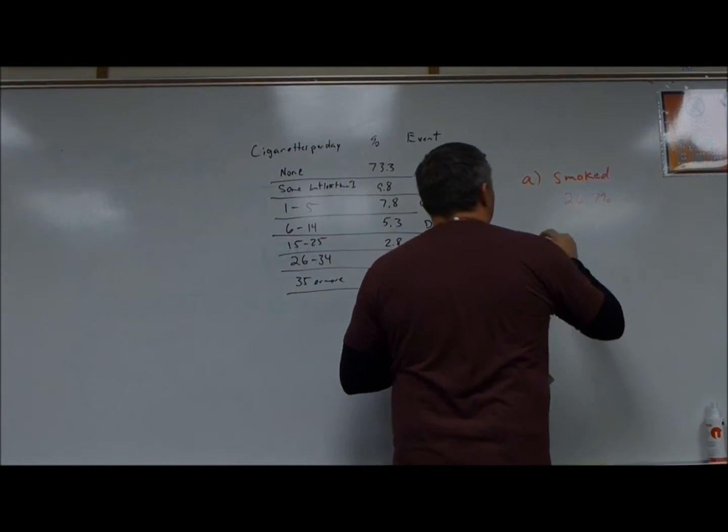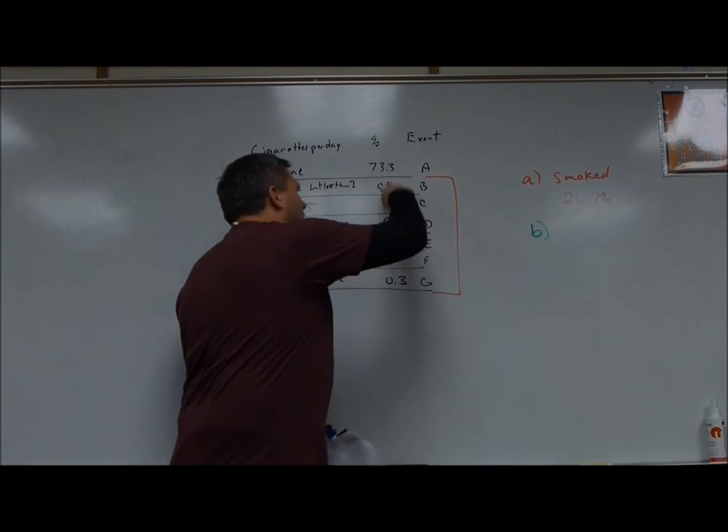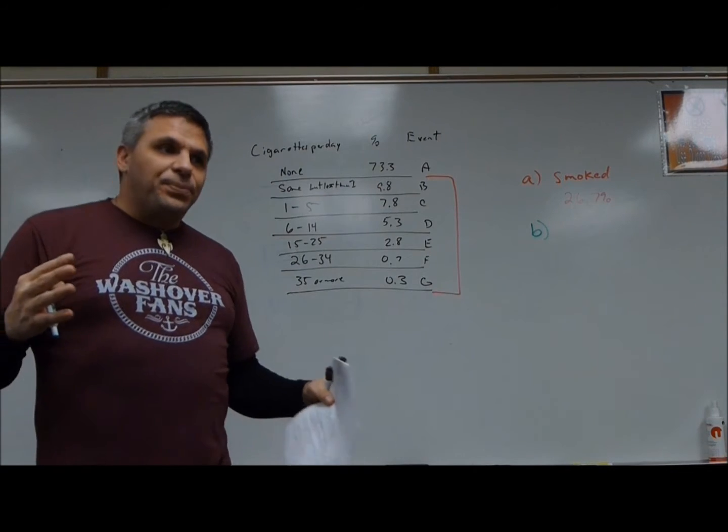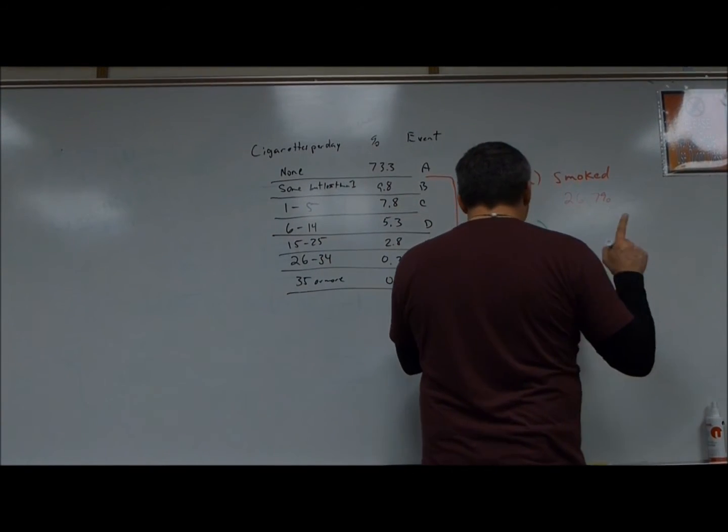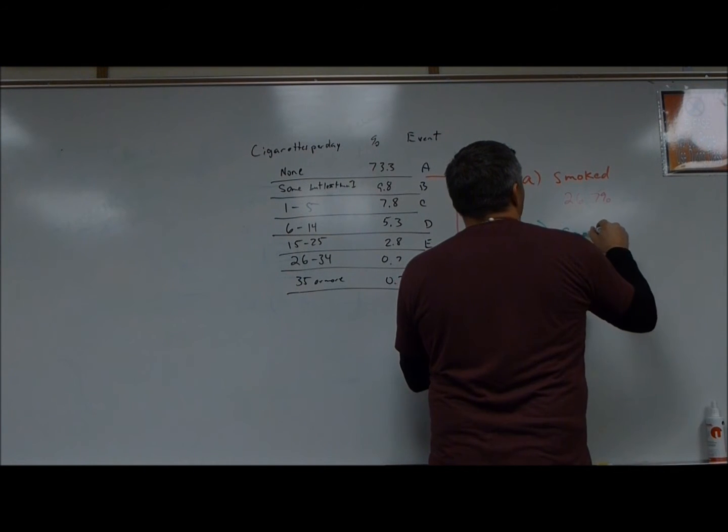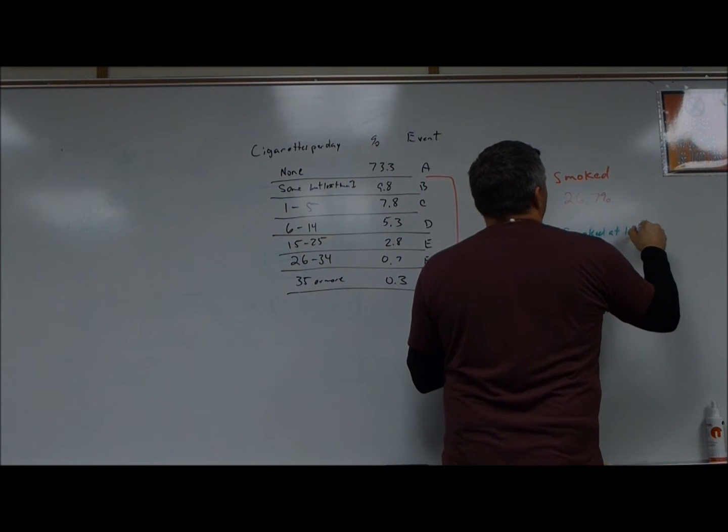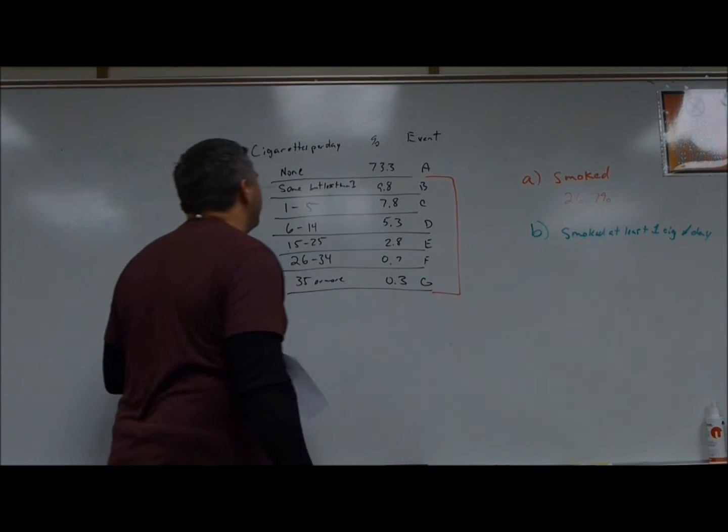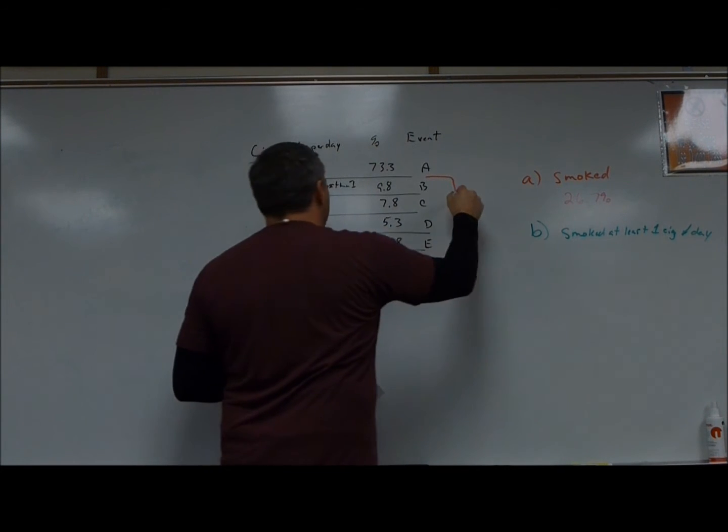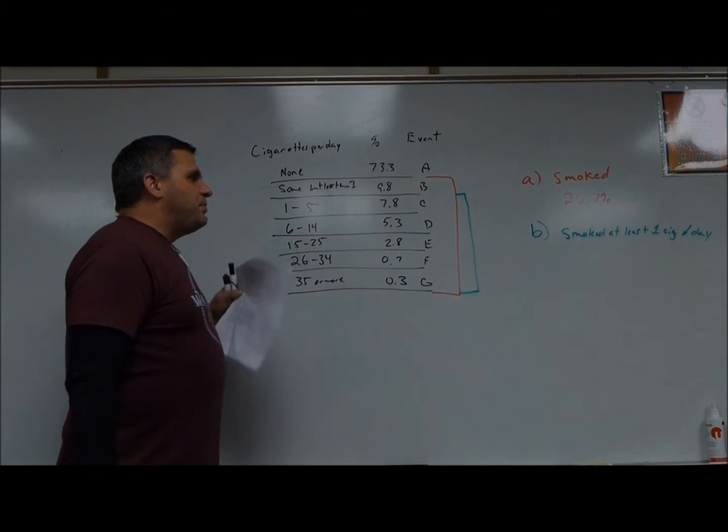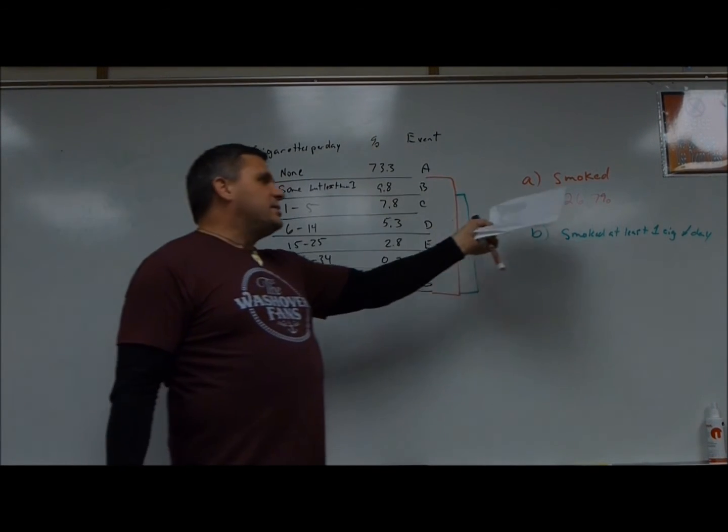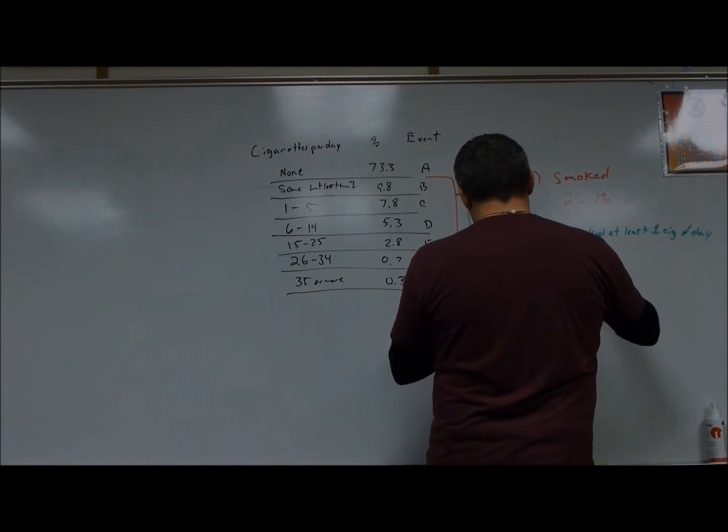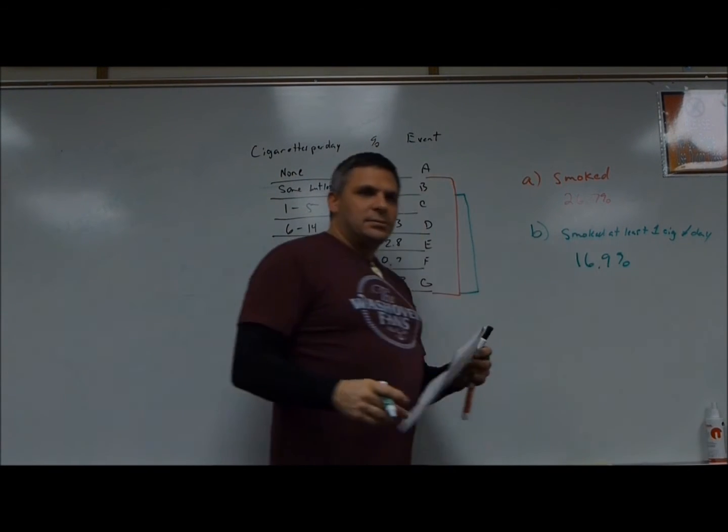So B, notice I'm changing the colors this time a little differently. Because there were so many of these colors, I decided I didn't have that many colors, so I'm going to use a color scheme that's a little different. In this B, it says smoked at least one cigarette per day. So at least one, this is less than one, right? So that's not included. So at least one would be these guys. So basically, I would take this 9.8 and subtract it from that, or just add these up, and I would get 16.9%.